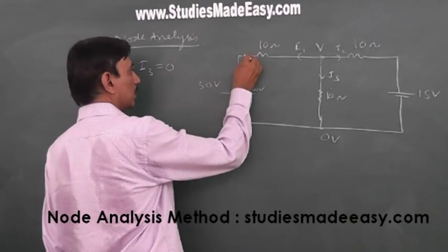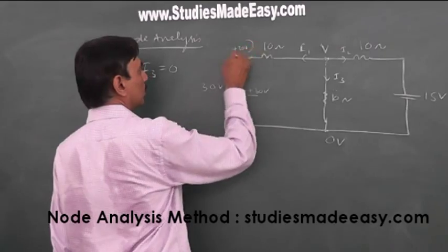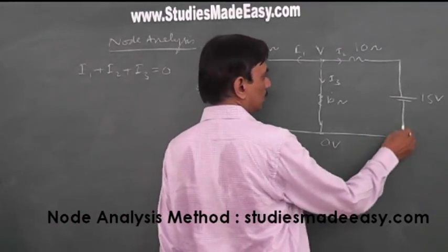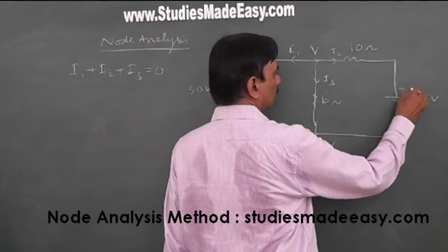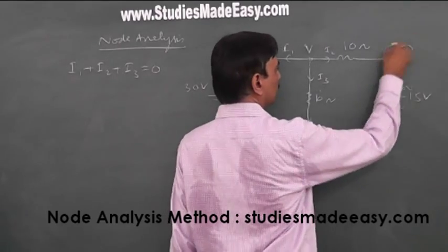So from here to here, so obviously this end of the resistor is also plus 30 volt. Similarly over here, if I see this is at 0 volt, this is at plus 15 volt.